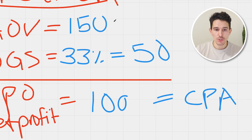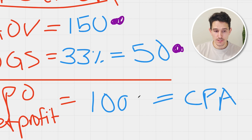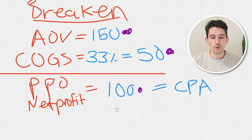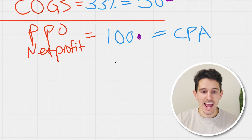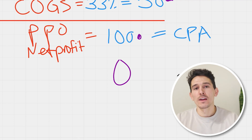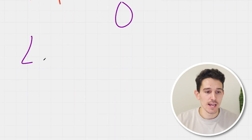If we acquire a customer for a hundred bucks, that customer on average is going to drive us $150 in order value, which is going to cost us $50. That's going to then net us a profit of a hundred bucks, meaning we will overall profit after the ad cost $0.